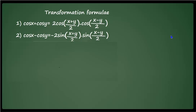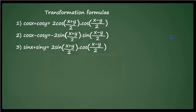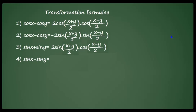The third formula is sin x + sin y = 2 sin((x+y)/2) · cos((x−y)/2) — here sin comes first on the right side. The fourth formula is sin x − sin y = 2 cos((x+y)/2) · sin((x−y)/2) — here cos comes first. You must remember all four formulas for solving numerical questions.